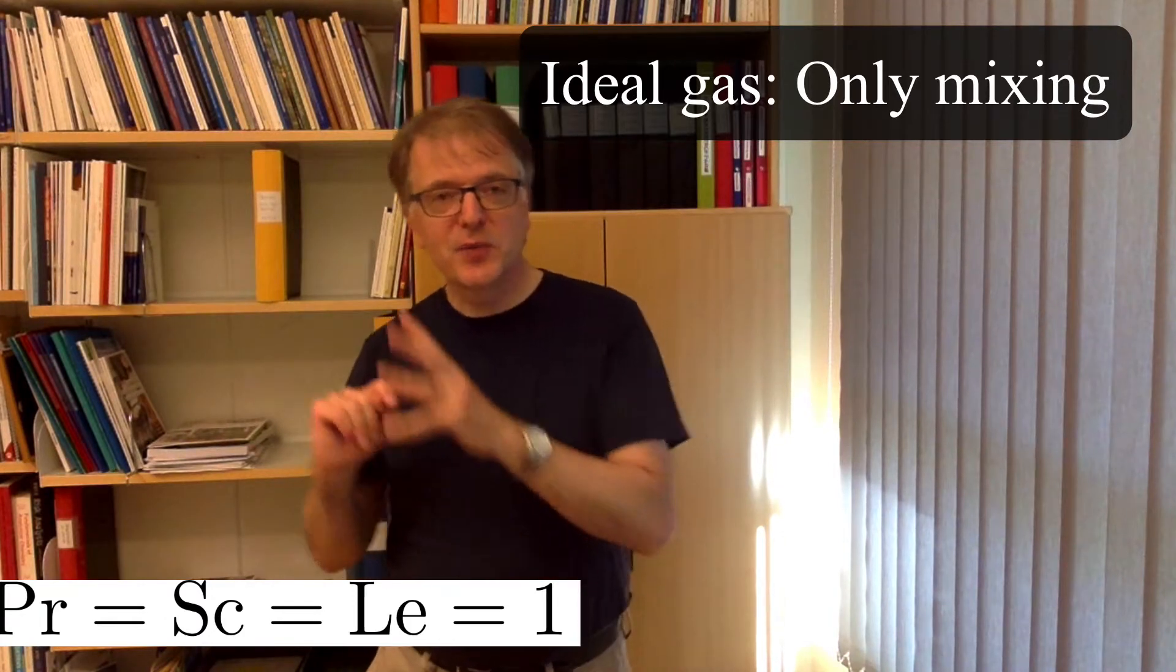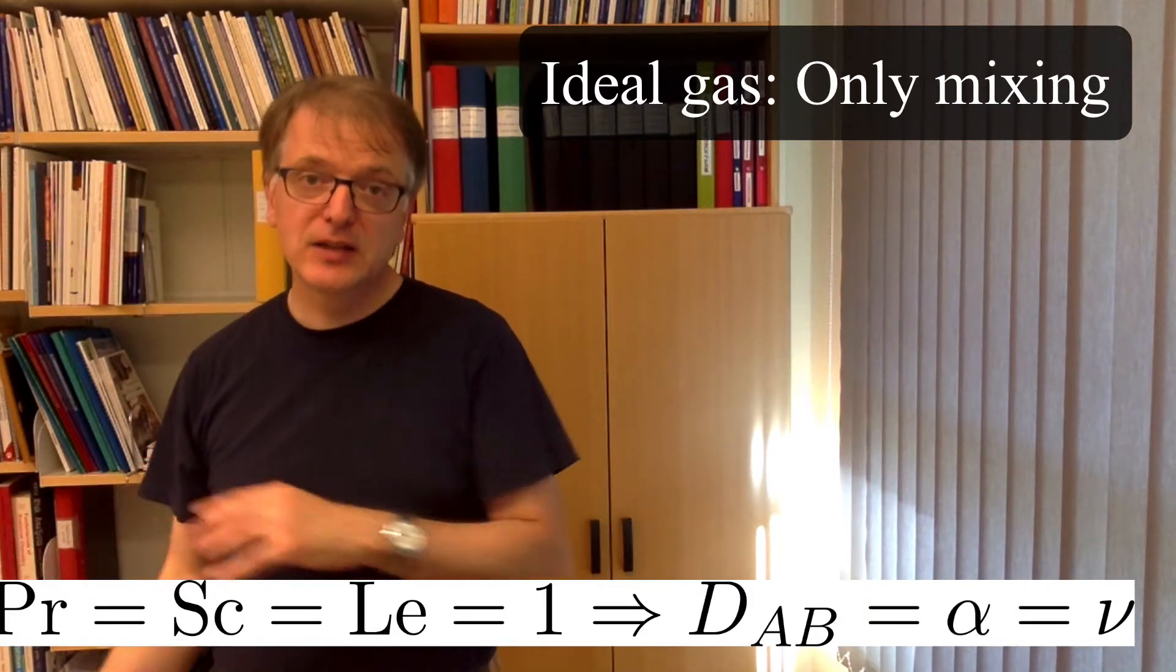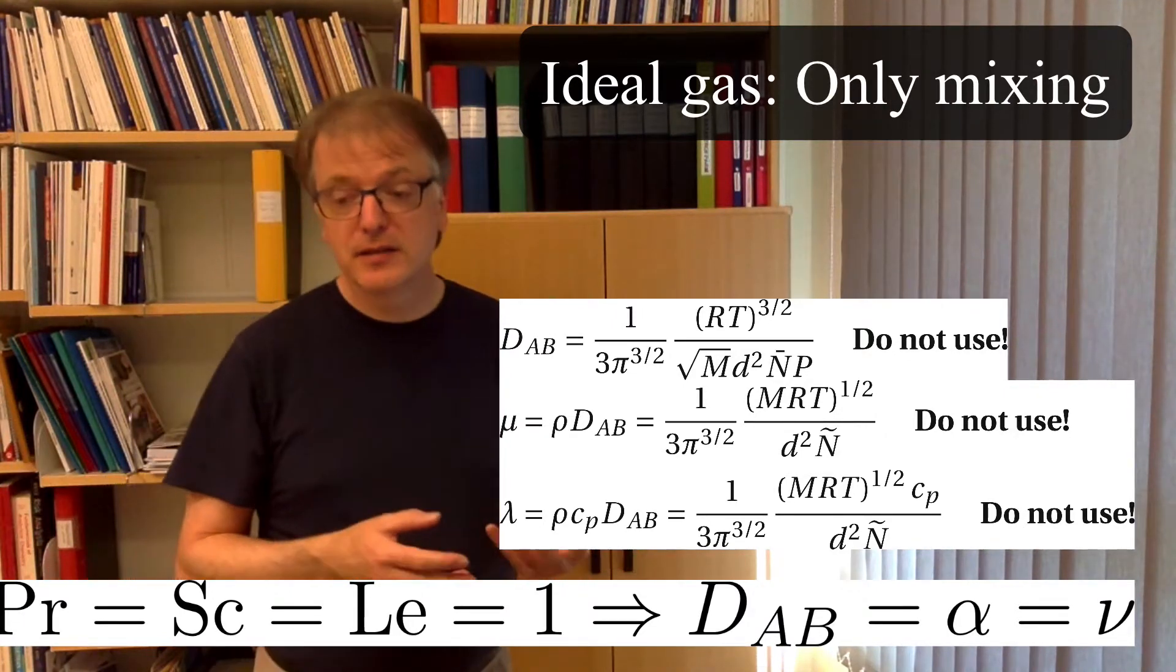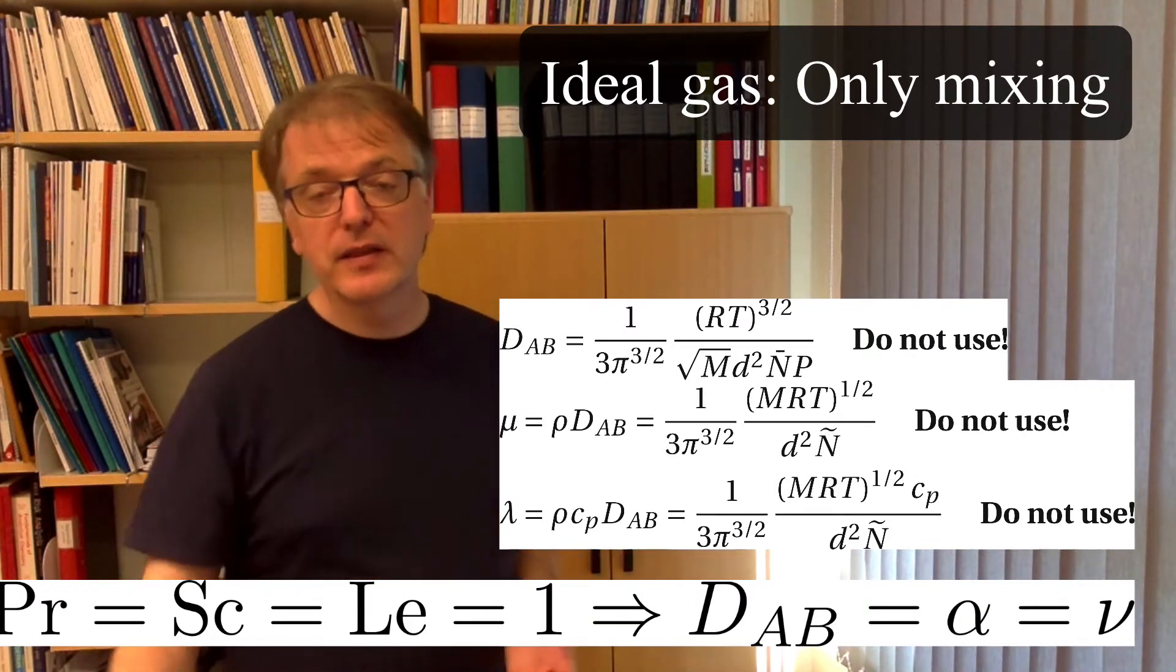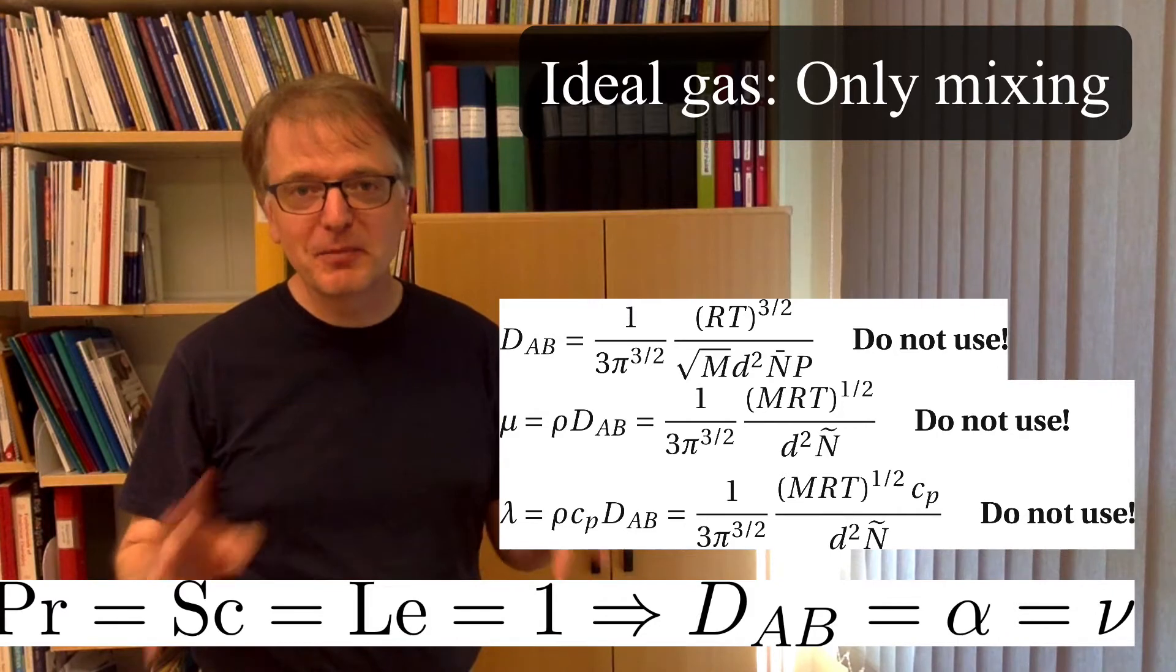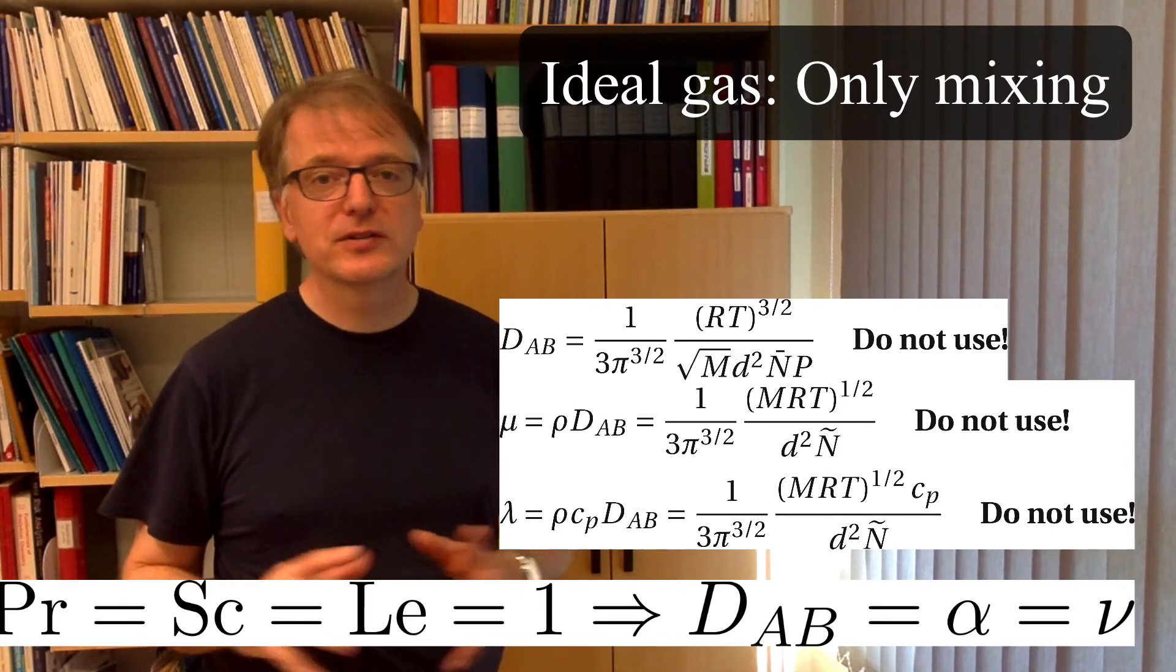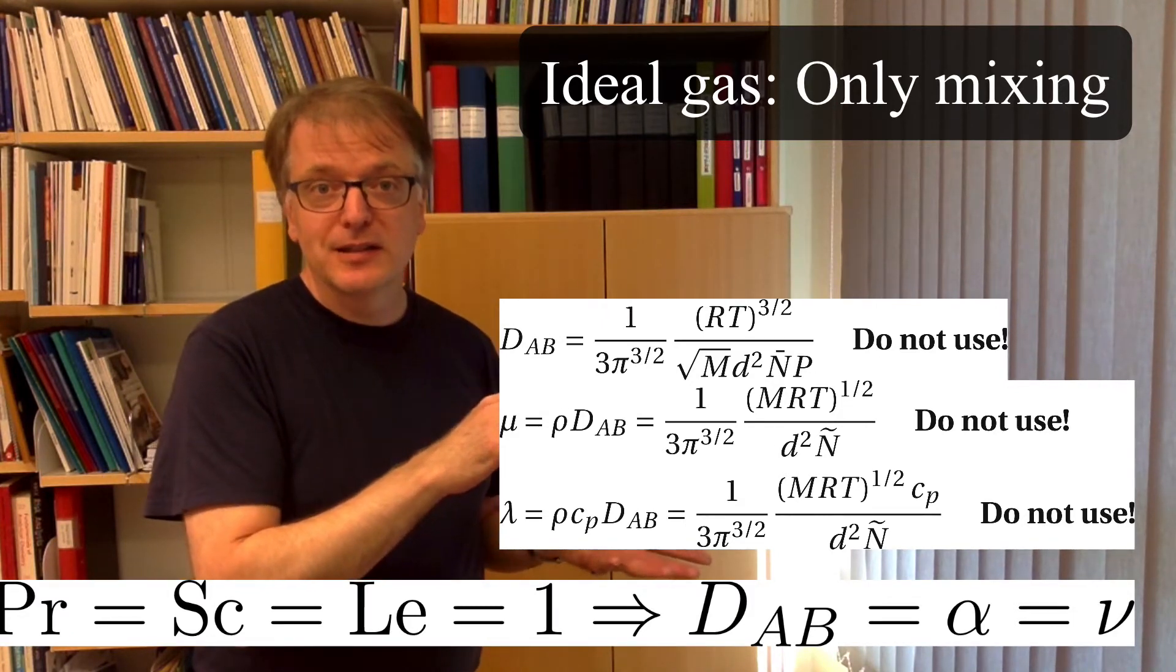But if they are one, then we can actually translate one to the other. We can translate the diffusivity into a heat conductivity or a heat diffusivity, and we can translate the diffusivity into a viscosity. And then we get these equations. And these equations are all bad because we started out with something bad. And then on top of that, we took the assumption that we have an ideal gas, which might be okay in certain situations, but other situations not. So these are the equations you get if you make these assumptions.